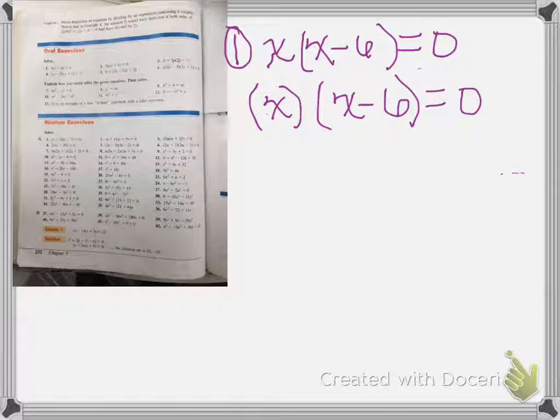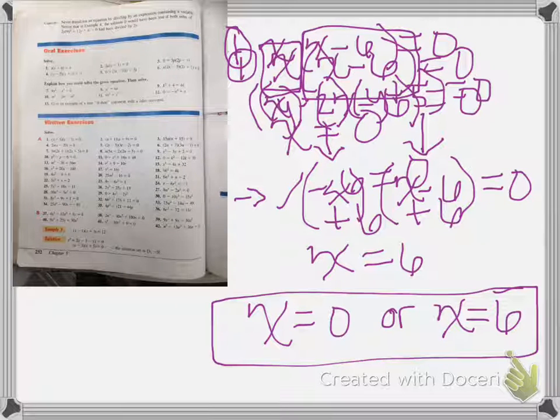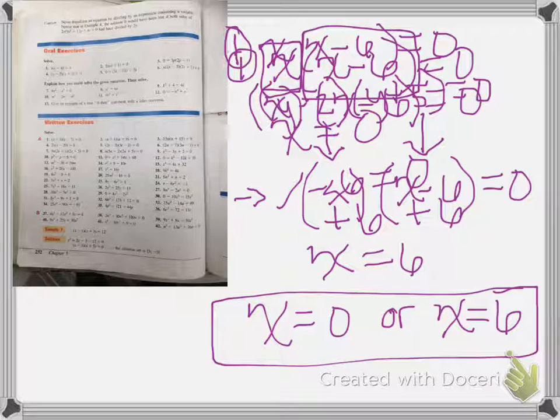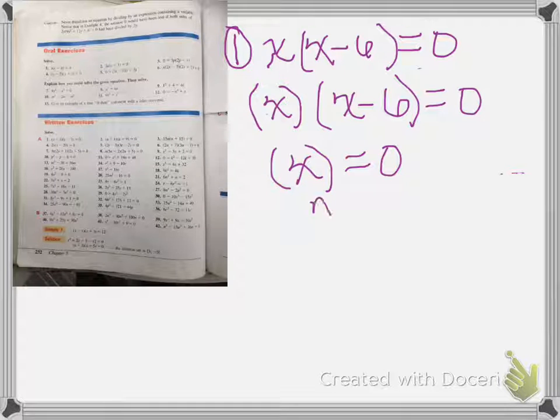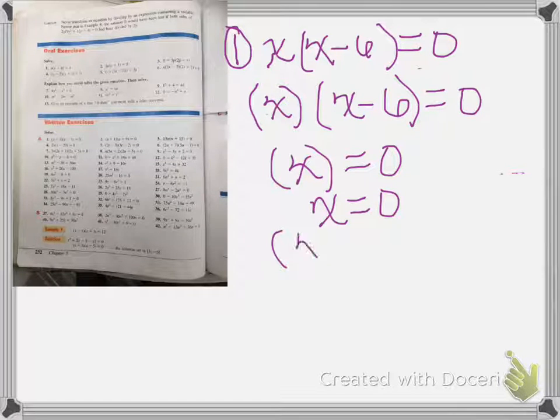So each one of these will be set equal to zero, so we'll have x equals zero, which is the same as saying x equals zero, then we'll have x minus 6 equals zero.